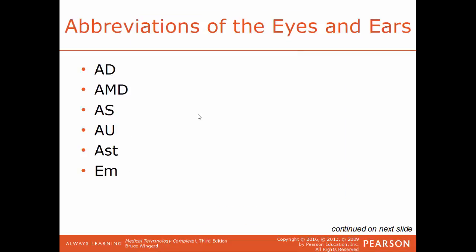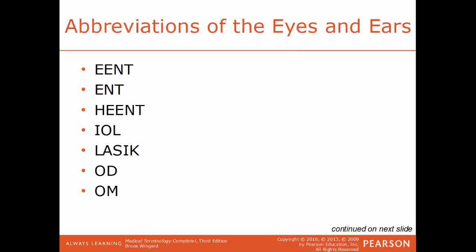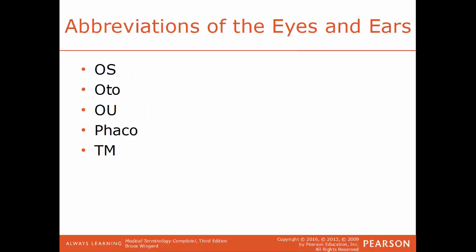Now we'll go over some common abbreviations in reference to the eyes and the ears. AD — a Latin term meaning the right ear. AMD — age-related macular degeneration. AS — a Latin abbreviation for the left ear. AU — a reference for both ears. AST — astigmatism. EM — ametropia. EENT — ear, eyes, nose, and throat. ENT — ear, nose, and throat. HENT — head, ears, eyes, nose, and throat. IOL — intraocular lens. LASIK — laser-assisted in situ keratomileusis. OD — the Latin acronym Oculus Dexter, meaning the right eye. OM — otitis media. OS — Oculus Sinister, or the left eye. OTO — short for the ear. OU — means both eyes. PHACO — short for phacoemulsification. TM — tympanic membrane or eardrum.